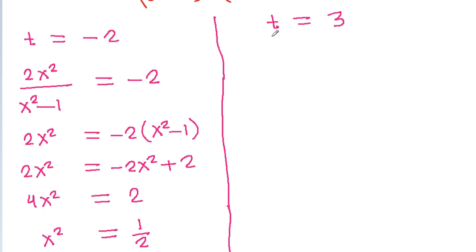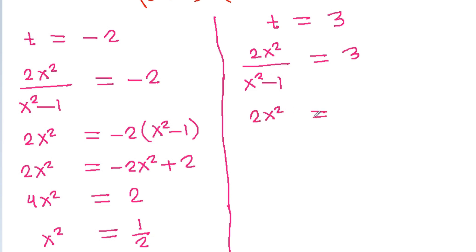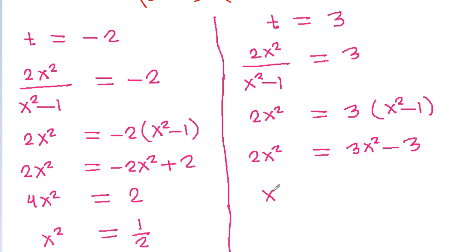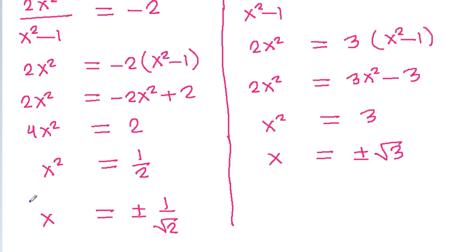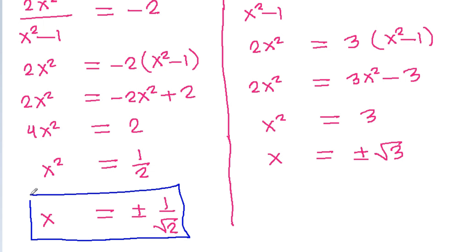For t = 3: 2x²/(x²-1) = 3. Cross-multiplying gives 2x² = 3(x²-1), so 2x² = 3x²-3, giving x² = 3, so x = ±√3. Therefore the solutions are x = ±1/√2 and x = ±√3.